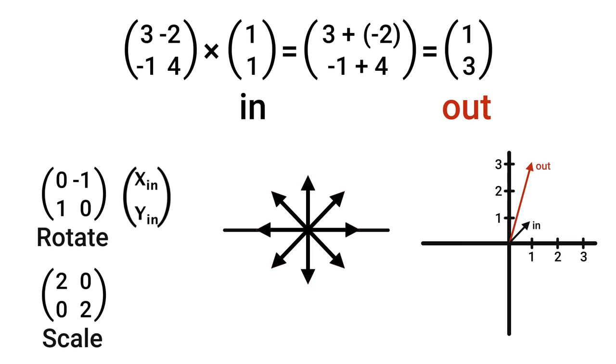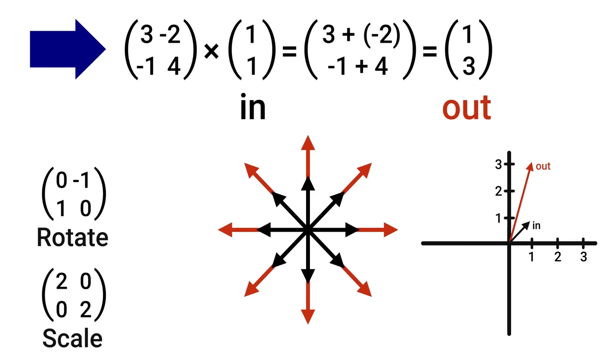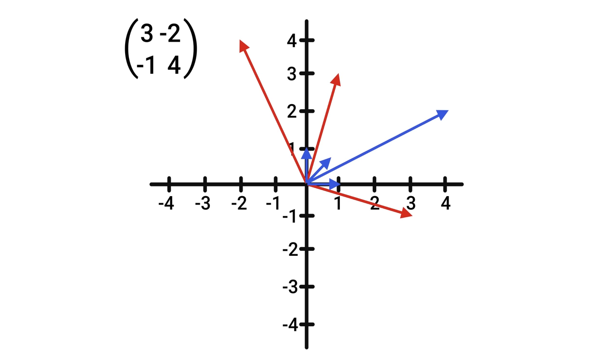But most 2 by 2 matrices, like this one we were analyzing, aren't as simple. Different input vectors get scaled and rotated differently. However, the transformations are all linear, as in any vector on the same line as one of those inputs will be mapped to a vector on the same line as the corresponding outputs.